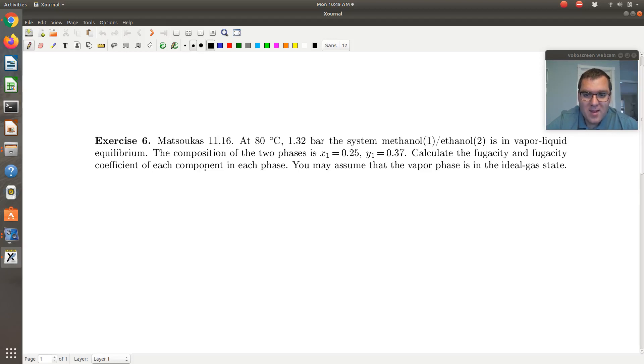So at 80 degrees C and 1.32 bars, the system methanol and ethanol is in vapor-liquid equilibrium. The composition of the two phases is x1 is 0.25 and y1 is 0.37. Calculate the fugacity and fugacity coefficient of each component in each phase. You may assume that the vapor phase is in the ideal gas state.